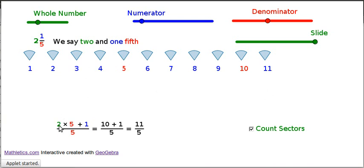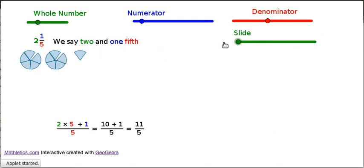1 lot of 5, 2 lots of 5, so there's the 2 lots of 5, plus the 1 left over.